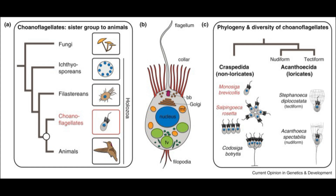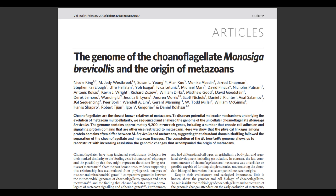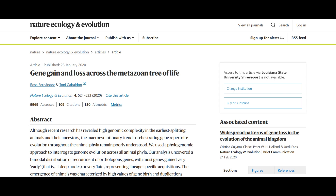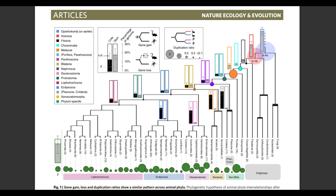There are two orders of choanoflagellates: Craspedida and Acanthoecida. Craspedida contains the most well-known of all choanoflagellates, Monosiga brevicollis. In 2008, Nicole King et al. sequenced its genome, finding about 9,200 genes. M. brevicollis has a genome size of 41.6 million base pairs, which is similar in size to filamentous fungi and free-living protozoans, but much smaller than most animals. The team also found that introns in choanoflagellates are much shorter than those of eumetazoans, indicating a proliferation of introns early in animal evolution. A 2020 paper by Rosa Fernandez and Tony Gabaldon confirmed that holozoan and early animal evolution witnessed a massive increase in gene duplications, followed by subsequent gene loss in different clades of animals.